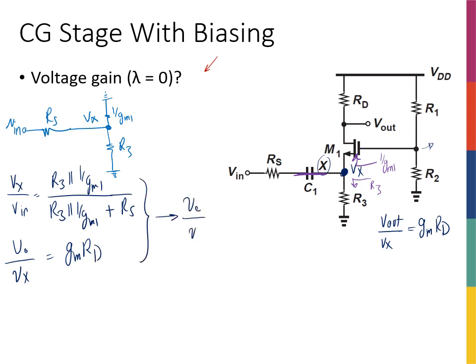Since Vout over VX equals gm*RD, I can combine these two expressions to find the full voltage gain Vout over Vn. There is nothing new here — this is another worked example, but the main point of this slide is to understand how to bias the common gate stage.